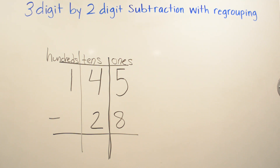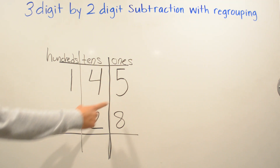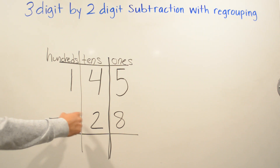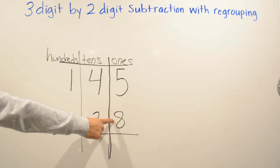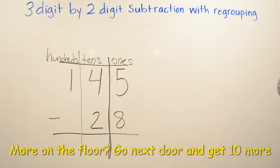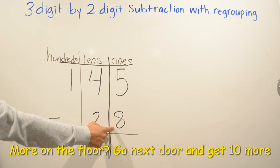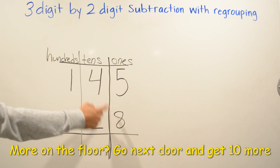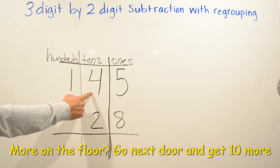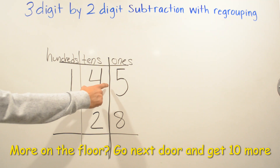So we're going to subtract five from eight, but we're going to go back and remember what we said: if there's more on the floor, go next door, and get ten more.